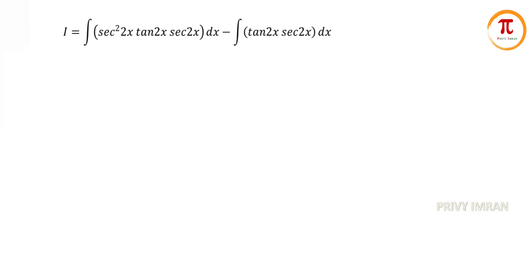Let me consider I1 as equal to integration of secant squared 2x tan 2x into secant 2x dx, and I2 is equal to integration of tan 2x into secant 2x dx. Now let me consider I1.